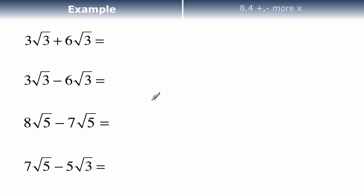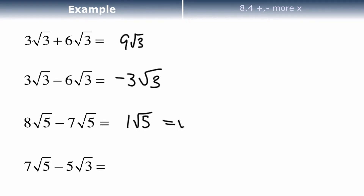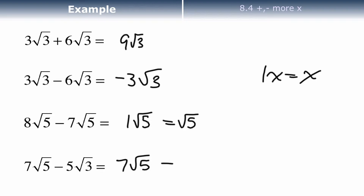Try some here — press pause and then try it. Okay, this one you should have got 9 root 3. 3 take away 6 would be down 3 root 3. Both root 5: 8 take away 7 would be 1 root 5, or I could just write that as root 5 — just like if I have 1x, that's the same as x. I can't do anything with this one; I would just have to write it as 7 root 5 minus 5 root 3 because the radicals aren't the same. If they're not the same, you can't do anything with that — 5 and 3 can't be simplified.